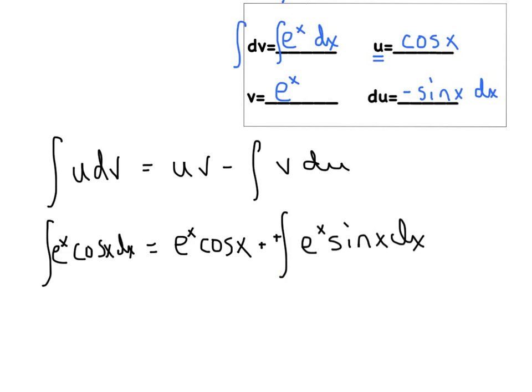Looking at this new integral we've created, I'm not in a better place than before. It's still the product of an e and a trig function — two transcendentals. Usually by this point we've encountered something easily integrable. So I've got to do a second integration by parts with a whole new assignment for u and dv.